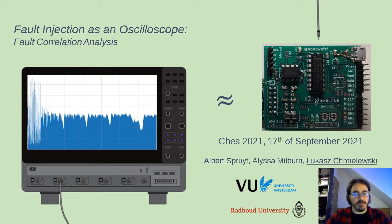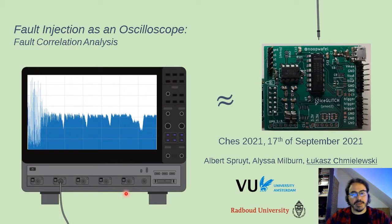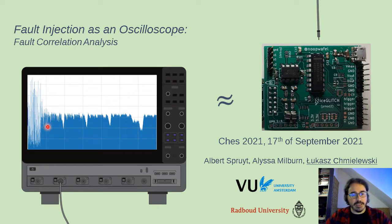This talk concerns both fault injection and side channel analysis. On the left side of this title slide we can see an oscilloscope, a tool commonly used for fault injection — here we see that it collects some side channel traces. On the other hand we have our voltage glitching device that we will effectively use to produce traces that look like side channel traces. These traces here are not power consumption; this is actually a trace constructed using fault injection.